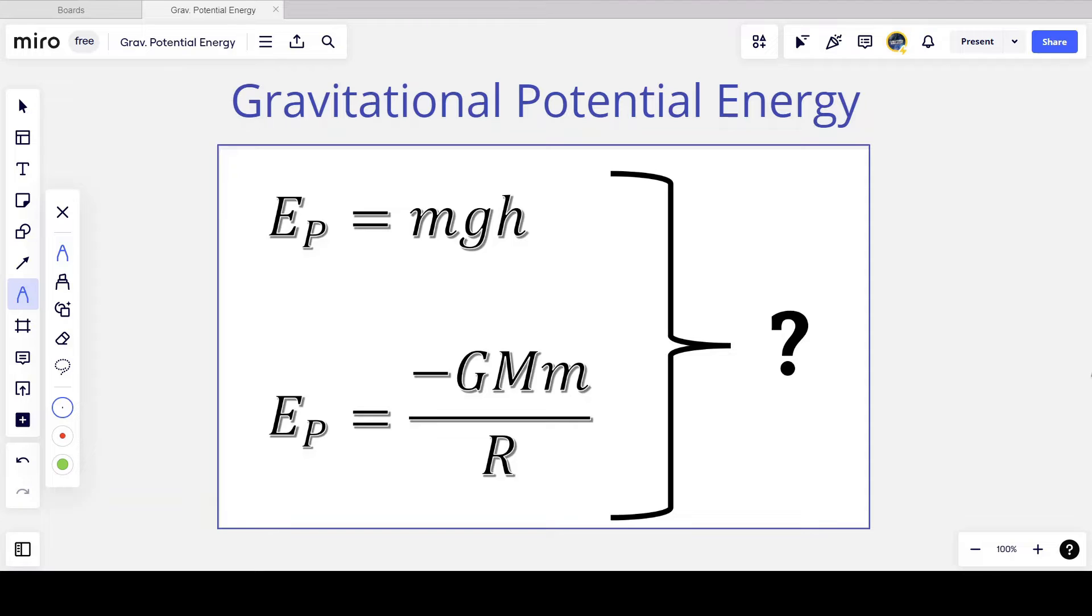Hey everyone, I'm Mr. K. Welcome back to Everything is Relative, where today we're going to be doing something a little different. We're going to be looking at the two equations for gravitational potential energy and seeing why we need two instead of just one.